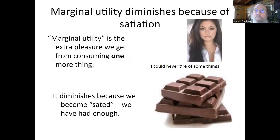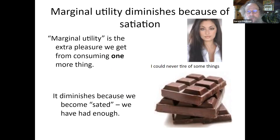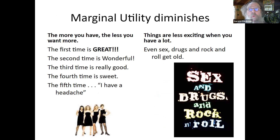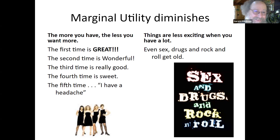Marginal utility diminishes because of satiation — the extra pleasure we get from consuming one more thing diminishes because we become sated and we've had enough. I've got a pile of chocolate — you want more chocolate? Yeah sure, but I've had enough chocolate. Marginal utility diminishes. The more you have, the less you want more. The first time is great, the second time is wonderful, the third time is really good, the fourth time it's sweet — but the fifth time: don't touch me anymore. I've had enough.